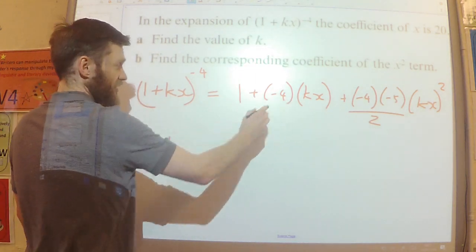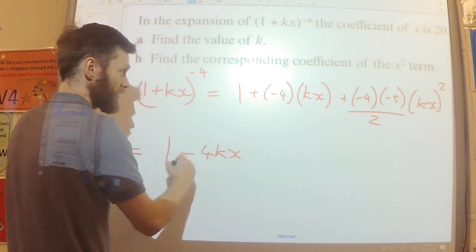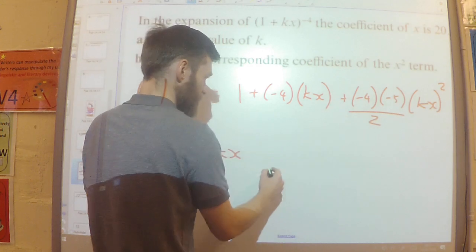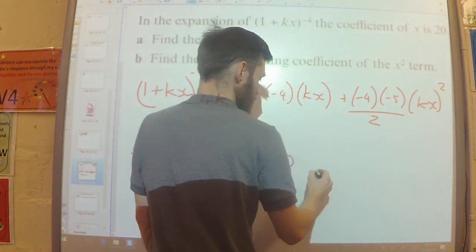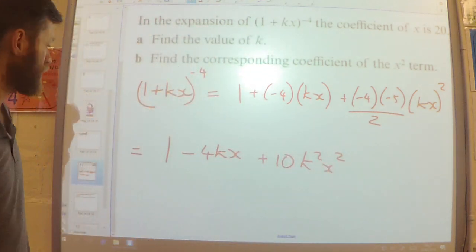So let's write this out. So 1 plus, actually it's going to be minus 4kx. Minus 4 times minus 5 is 20, divided by 2 is 10. And then the kx all squared would be k squared x squared.